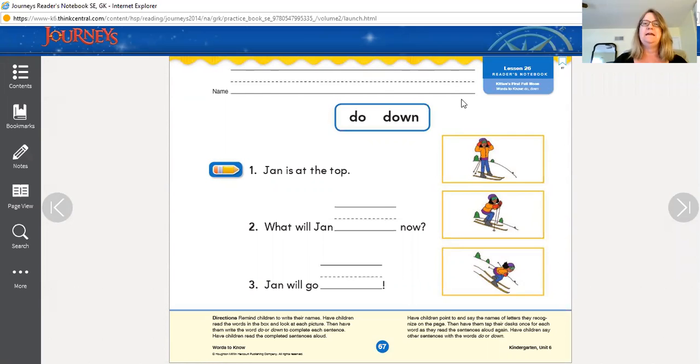I want to show you what page you're doing today for reader's notebook. It's page 67 and 68, which are putting our sight words into a sentence so the sentence makes sense. So there's two pages. Here's our word bank: do, down. Here's pictures.